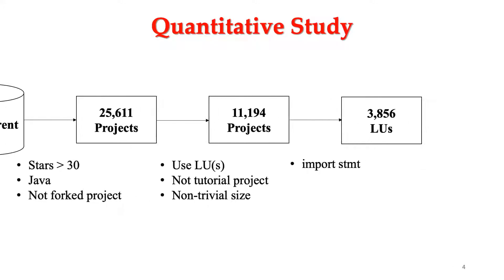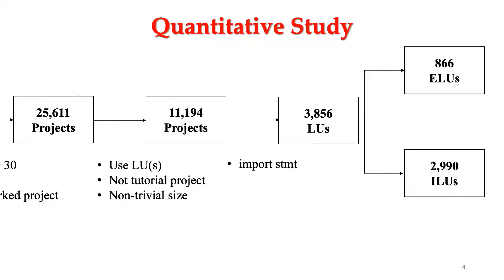These LUs can be further classified into external LUs and internal LUs. External LUs means the logging utility is directly imported from a third-party library, such as log4j, as we saw before. Internal LUs are logging utilities implemented inside the project. In the end, we have 866 external LUs and 2,990 internal LUs.